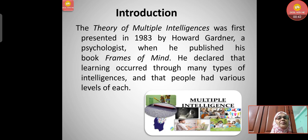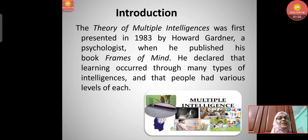The theory of multiple intelligences was first presented in 1983 by Howard Gardner, a psychologist, when he published his book Frames of Mind. He declared that learning occurred through many types of intelligences and that people had various levels of each. We have discussed about intelligence and what it means — having many traits in one person.